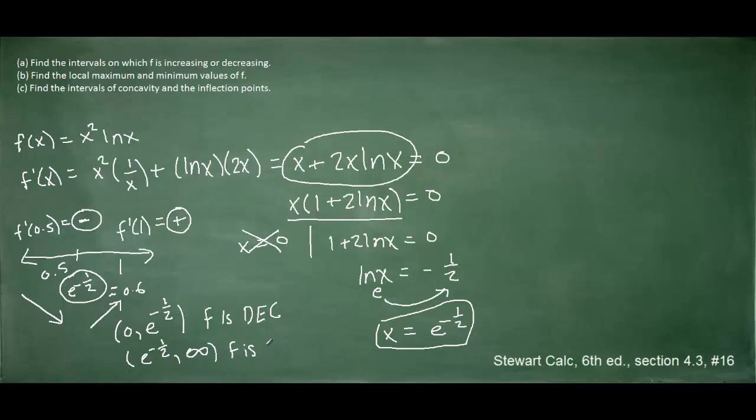We've killed two birds with one stone because part b asks us to find the local maximum and minimum values of the function. We can see by the direction of the arrows that the function gradually decreases, and then when it hits e to the negative 1 half, it turns around and begins to increase again. That, visually, is a minimum of the function. So the function f has a local minimum at x equals e to the negative 1 half.